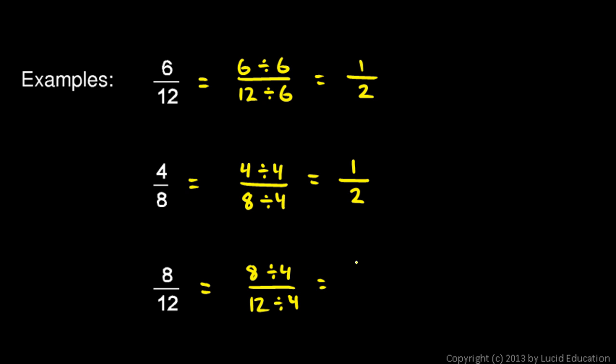8 divided by 4 is 2, and 12 divided by 4 is 3. As long as I divide the top and the bottom by the same number, the resulting fraction is equivalent to the original. Because I've divided, the numbers have become smaller, so I've reduced these numbers to smaller numbers.